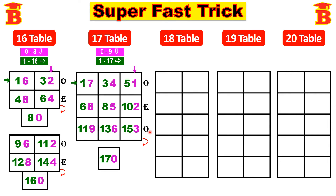These are odd numbers. Now this is the 17th table. So the table is: 17, 34, 51, 68, 85, 102, 119, 136, 153, and finally 170.